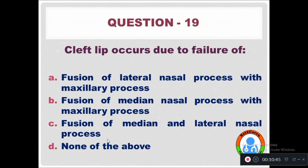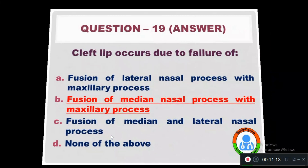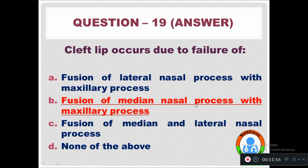Question 19: Cleft lip occurs due to the failure of — Option A: Fusion of lateral nasal process with maxillary process. Option B: Fusion of median nasal process with maxillary process. Option C: Fusion of median and lateral nasal process. Option D: None of the above. The right answer is Option B. Failure of fusion of the median nasal process with the maxillary process leads to cleft lip.